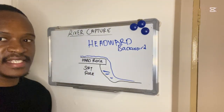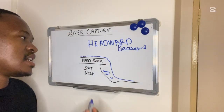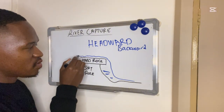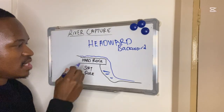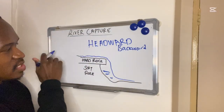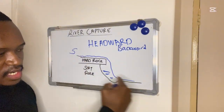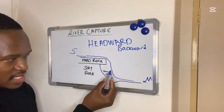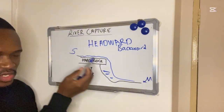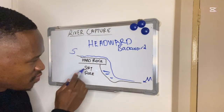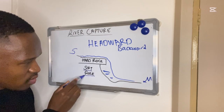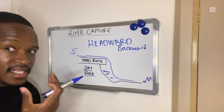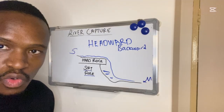The hard rock is more resistant to erosion while the soft rock below is less resistant and erodes faster. The river flows from its source and down towards the mouth. With headward erosion, the river erodes towards its source. This happens because the soft underlying rock is less resistant to erosion and erodes faster.